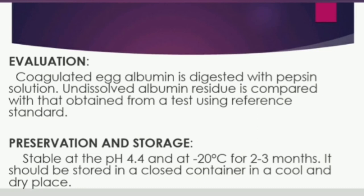To evaluate pepsin, coagulated egg albumin is digested with a pepsin solution. You take egg albumin and add pepsin solution to it. You check whether the albumin has dissolved — this confirms the standard activity of the pepsin being tested.